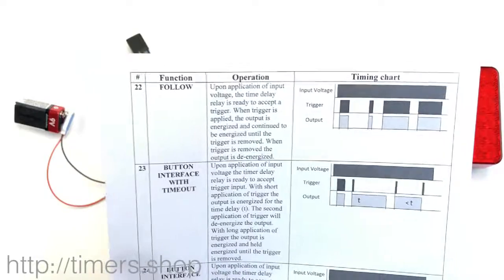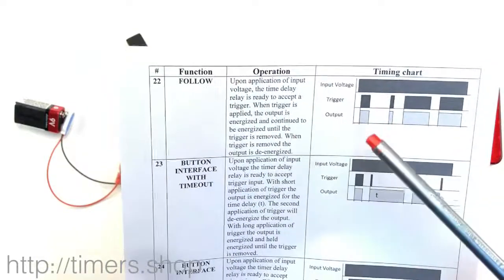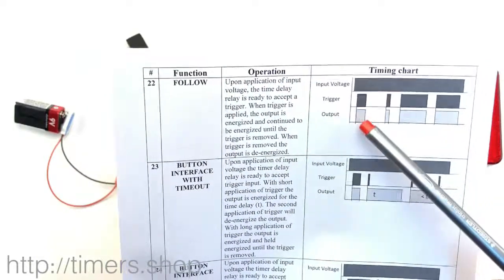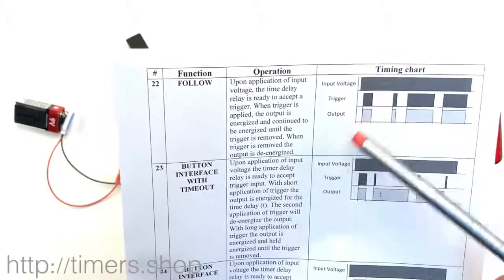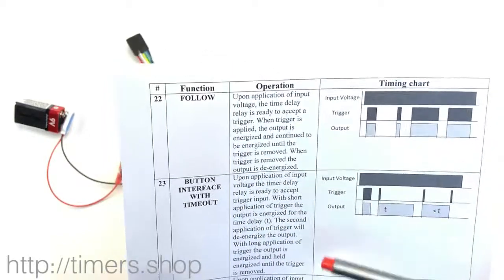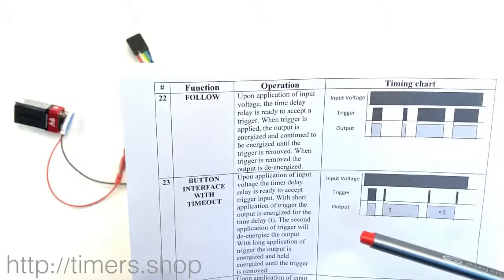Let's look at function number 22, Follow. The output follows the trigger, so when the trigger is active, the output is active. You can use it as a relay when you have a weak signal.